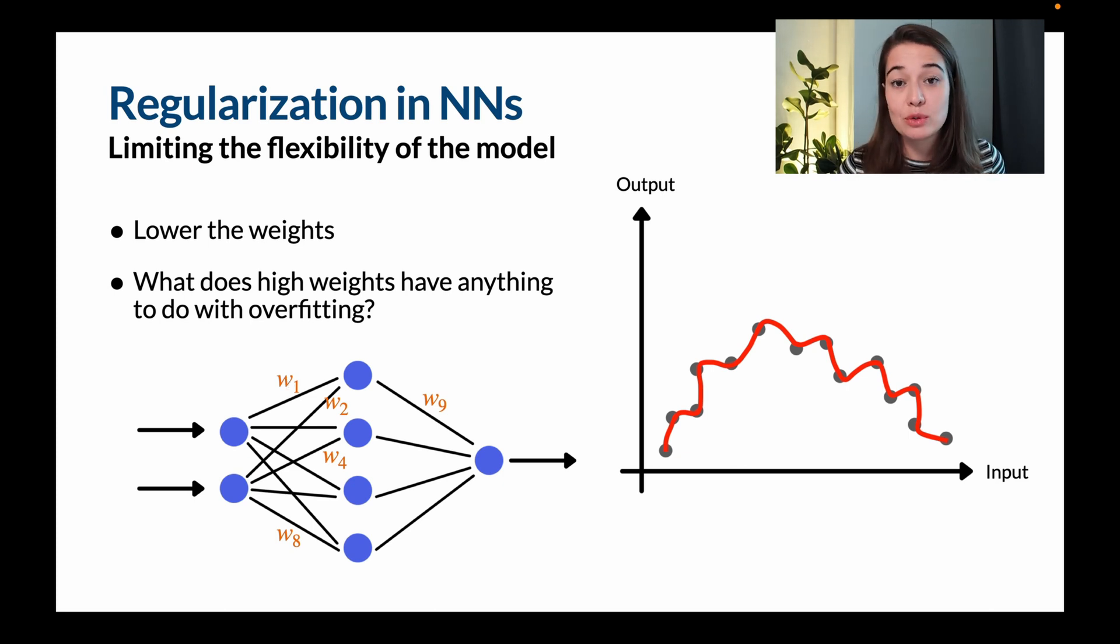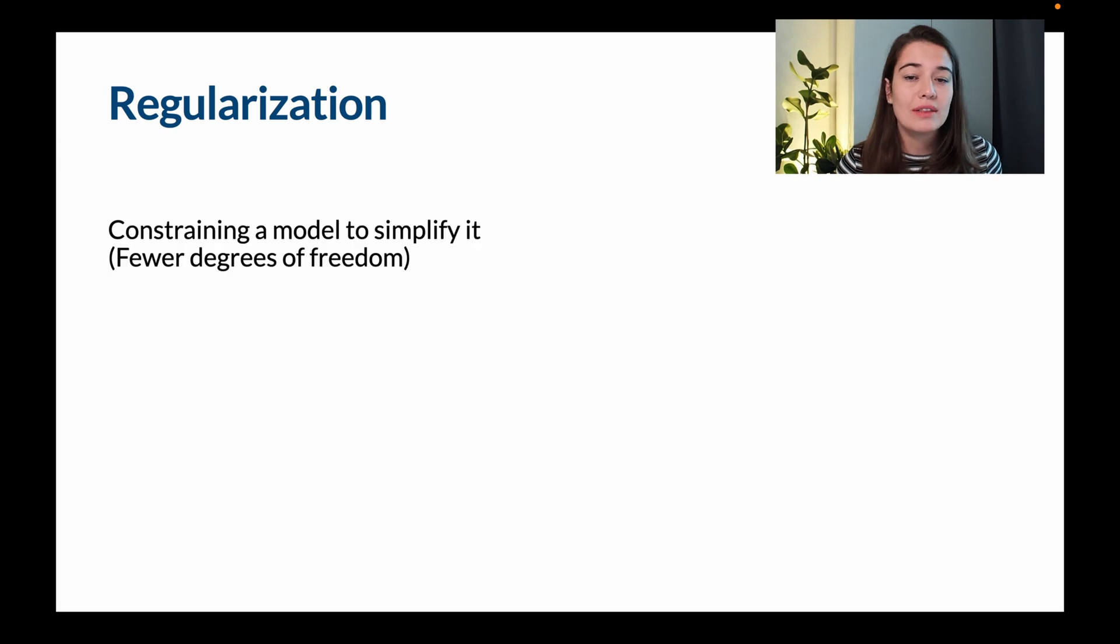Let's see what type of solutions we have in regularization. So there are two types of regularization techniques. The first one is, as we talked about, constraining the model, constraining the flexibility of the model, or you could call it then we have fewer degrees of freedom.